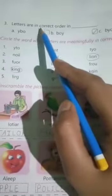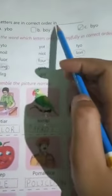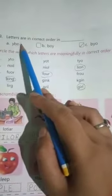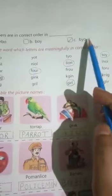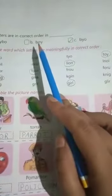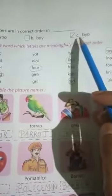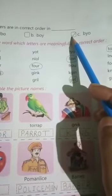Number 3. Letters are in correct order. We have to see which is in correct order: Y-B-O, B-O-Y, B-Y-O. So here we will tick B. The answer is B: B-O-Y.